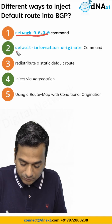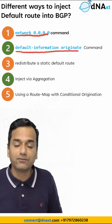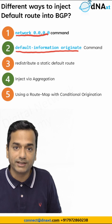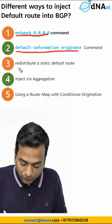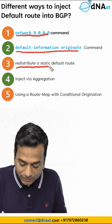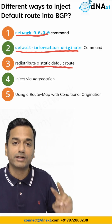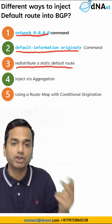Then, this is specific for the neighbor: default-information originate. If you have a default static route, you can redistribute the static route into BGP.